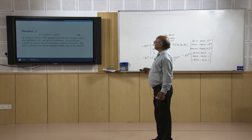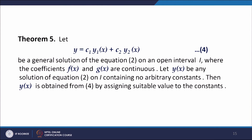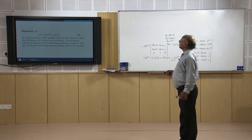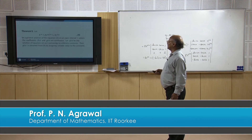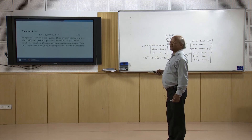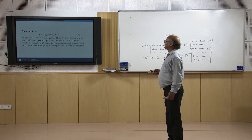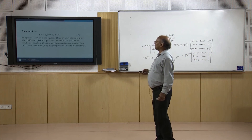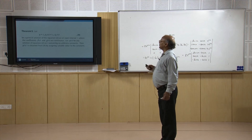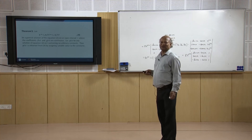The last theorem tells us that if y = c₁y₁(x) + c₂y₂(x) is the general solution of the homogeneous equation on I where coefficients f(x) and g(x) are continuous, then it includes all solutions of the equation — any particular solution y with no arbitrary constants is obtained by assigning suitable values to c₁ and c₂. This general solution includes all solutions of the equation. With this, I would like to conclude my lecture. Thank you very much for your attention.